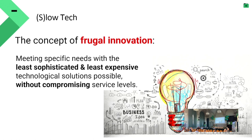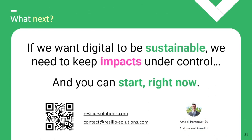To repeat what I've said throughout this presentation: if we want to use IT efficiently, if we want IT to be part of the solution and not part of the problem, if we actually want IT to save the world, we need to use less of it and we need to use it efficiently. What's next? What can you do? Be critical on what you do. I'm convinced that apart from the misleading marketing, IT can really be a solution to reduce our footprint — which we definitely need to reduce right now. We don't have 20 more years; we need to start right now. If we want IT to be sustainable, we need to keep its impact under control and think about it. And we can start right now. Thank you.